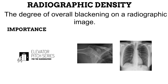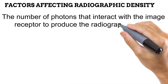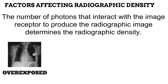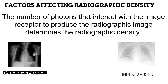A radiographic image is basically made of different shades of black, gray, and white. The degree of blackening — the density — produced on a radiographic image depends on the number of photons that get to the image receptor during image production. Anything that causes too many photons to reach the image receptor would produce an overexposed image, and anything causing too few photons would produce an underexposed image.